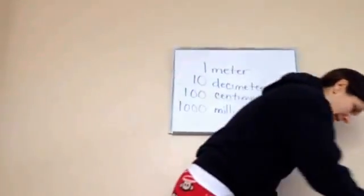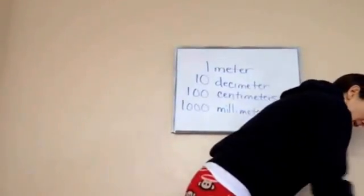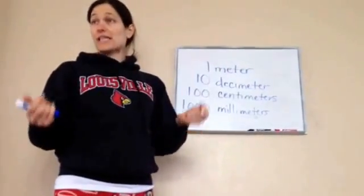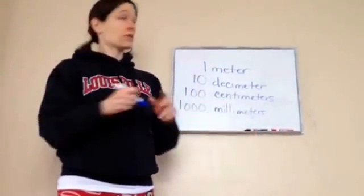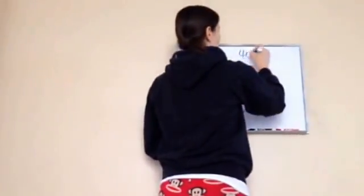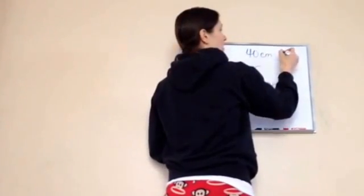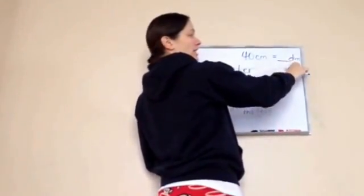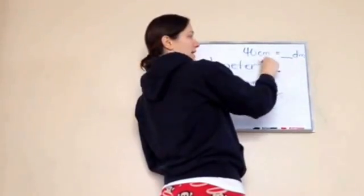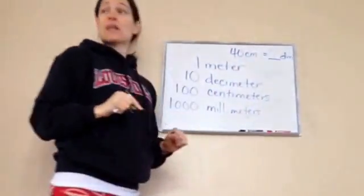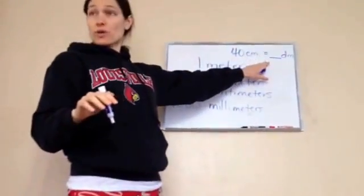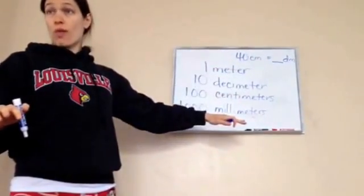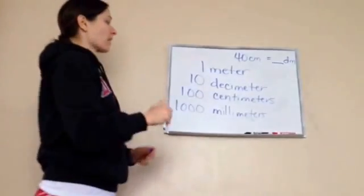Now, the next thing I want you to see is this. It says, 40 centimeters is how many decimeters? 40 centimeters equals how many decimeters? Now, I'm going to put dm for decimeters, cm for centimeters. Now, before we answer this question, I want you to see the pattern of this.